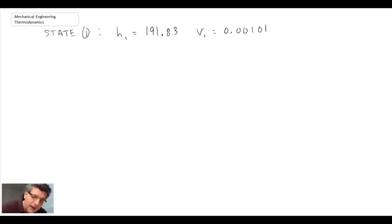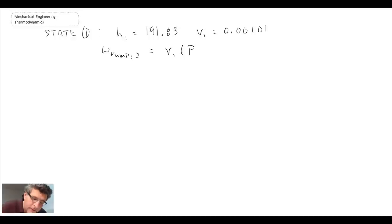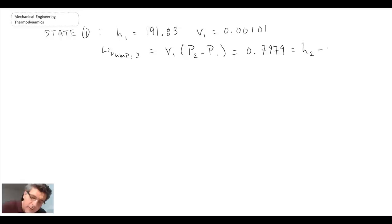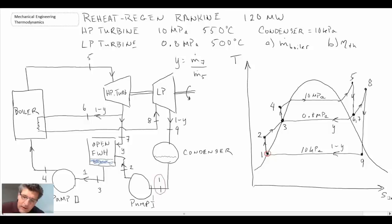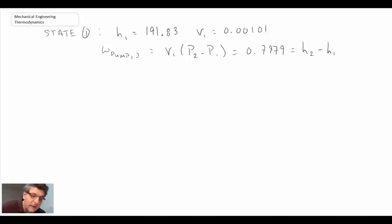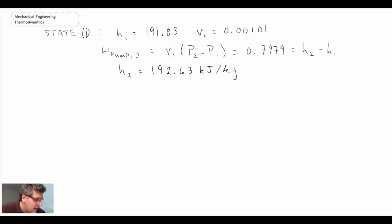In order to determine the enthalpy at state two, we'll be using the steady flow equation for work into a pump. Recall that is one we can evaluate knowing the specific volume at state one and the pressure change between states two and state one. That work is going to be equal to the change in enthalpy between states two and state one. Looking back on our TS diagram, that's the work going from state one to state two, and so with that we can determine the value of H2.